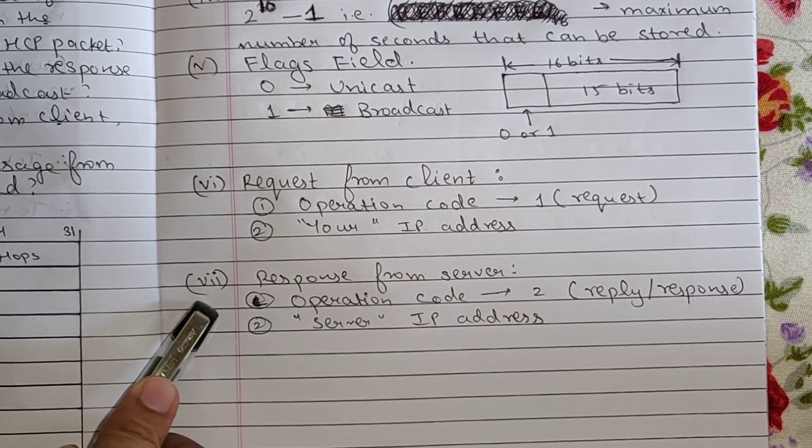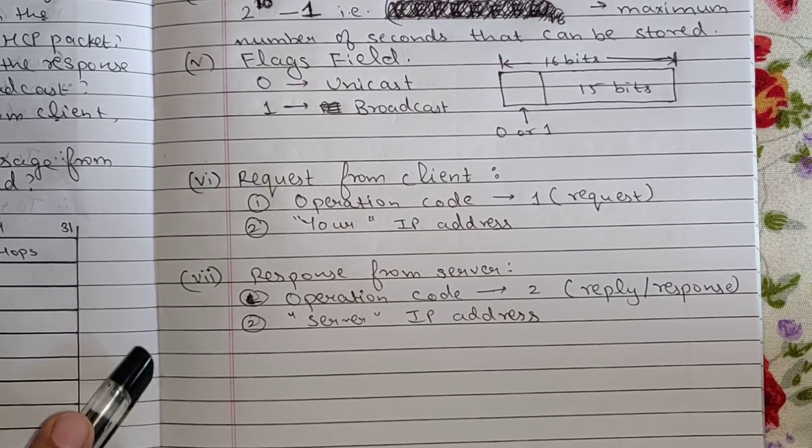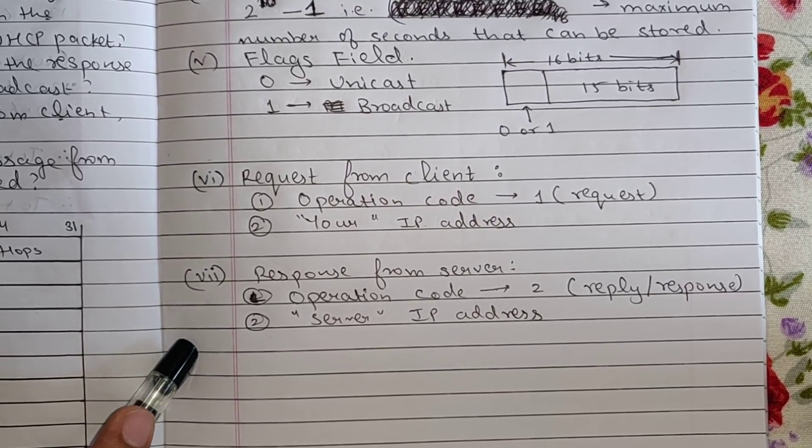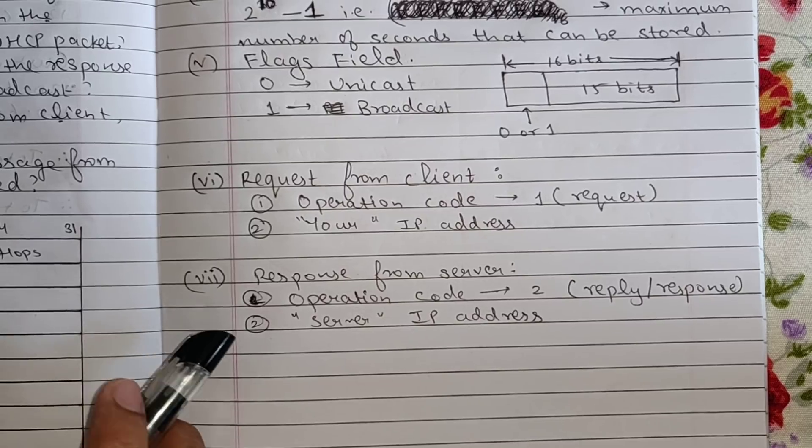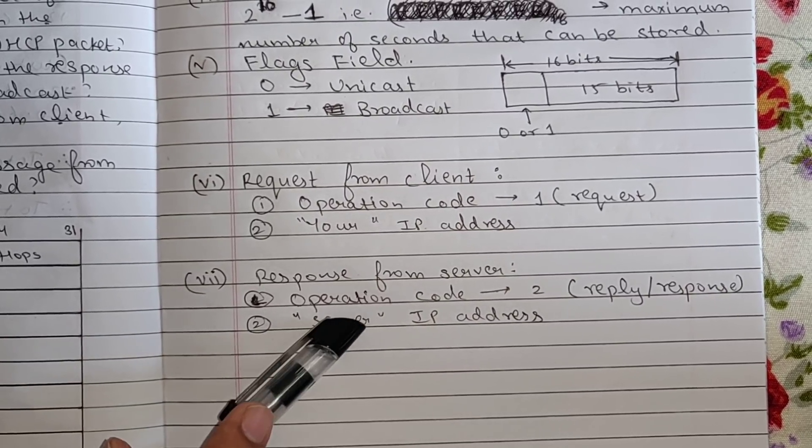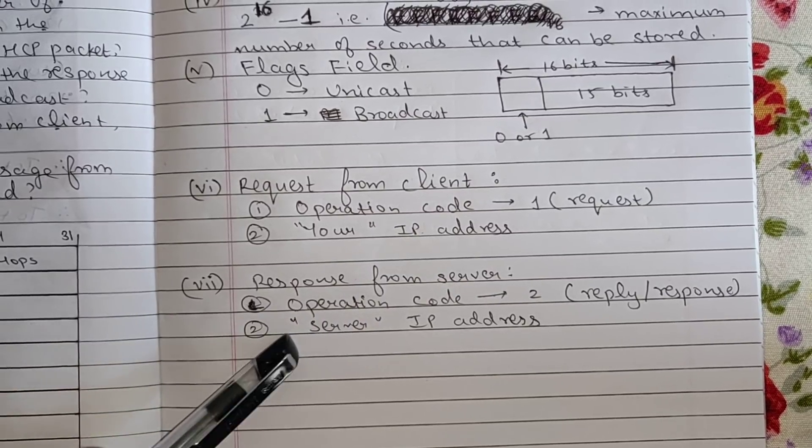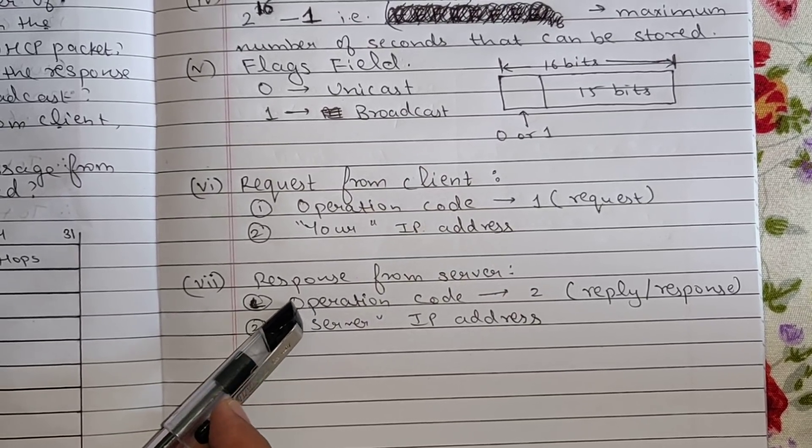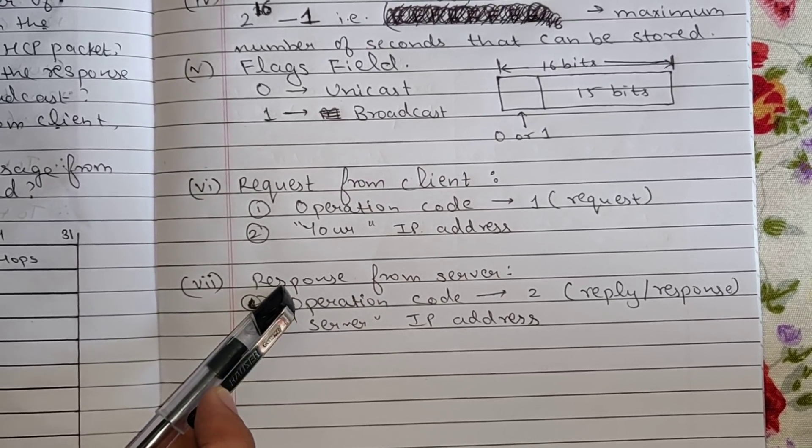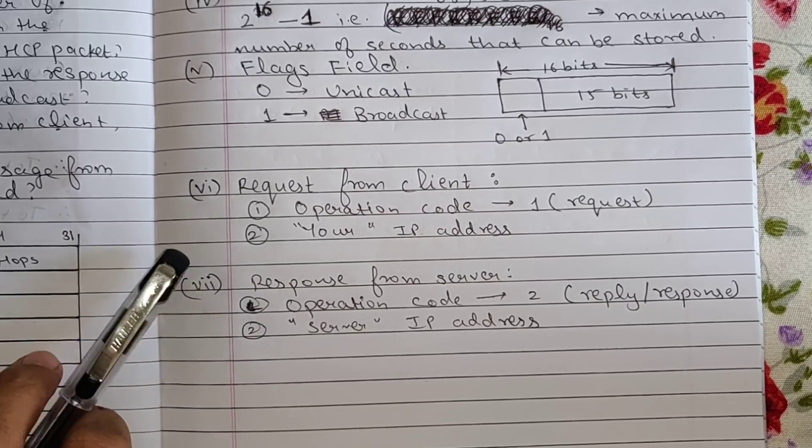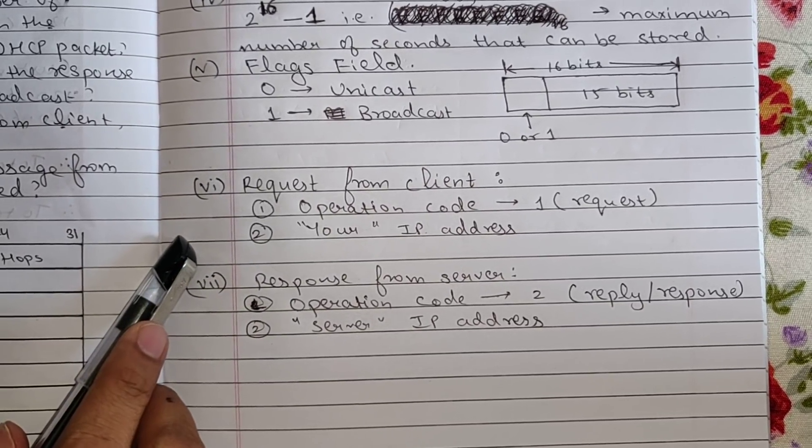The next is if DHCP packet is reply message from server which fields are used. So if it's a reply message then the operation code needs to be 2, that is reply or response, and then there also will be server IP address. So this was all about the December 2018 paper. See you in the next video, thank you.